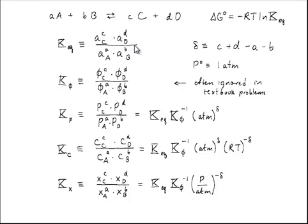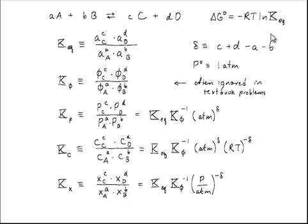It's convenient to make a couple of new definitions — things that we didn't talk about last time. When we have a reaction involving A plus B species on the left and C plus D species on the right, if all of those are gas phase species, it's quite convenient to define a property delta, which is C plus D minus A minus B. This is the change in the number of moles of gas molecules that you have as each mole of the reaction proceeds.